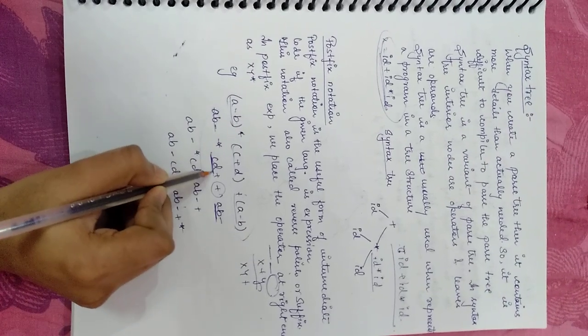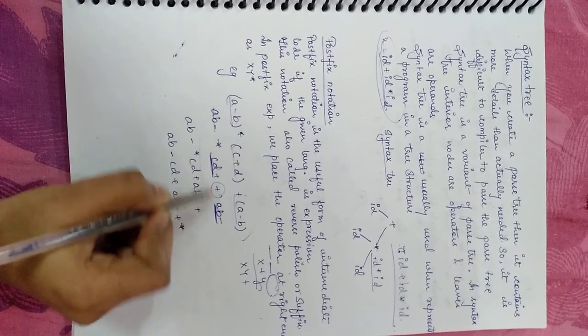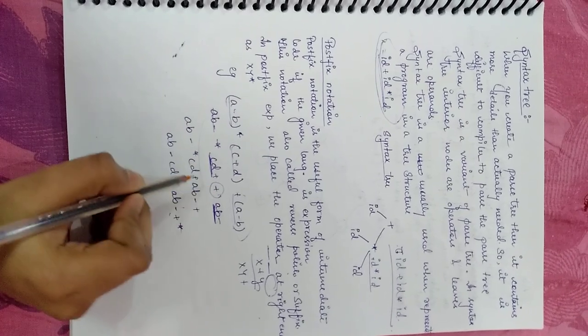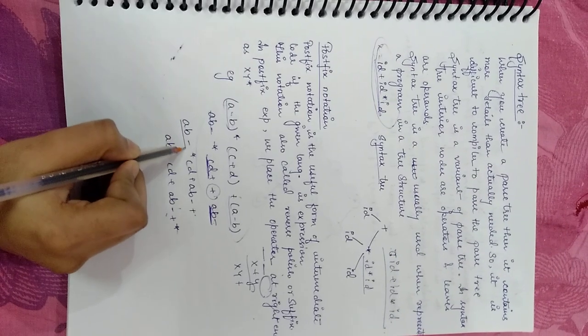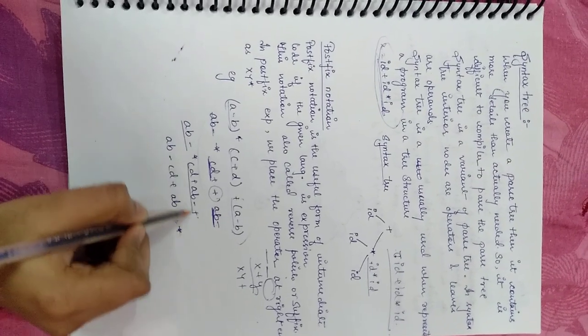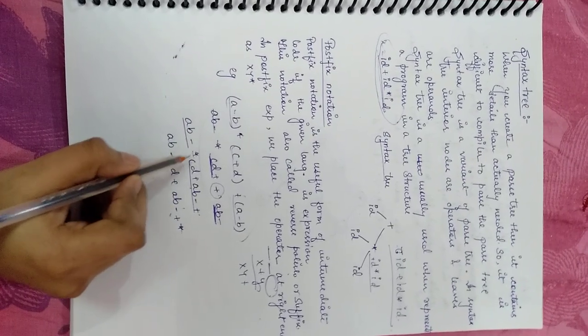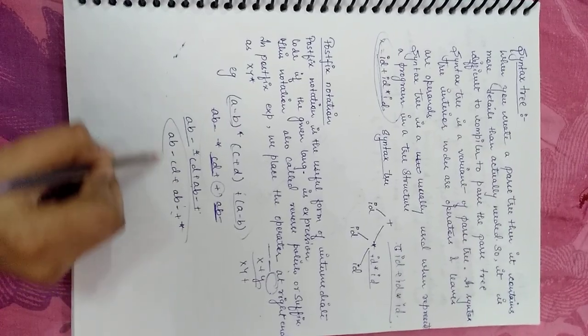Now one operand is the operand and one operand. This is an operator between these two operands. Then one is the operand and one is the operand. This is the operator between these two operands. This is our representation.